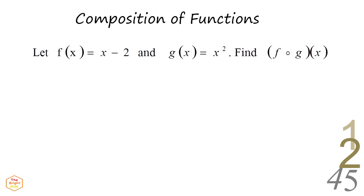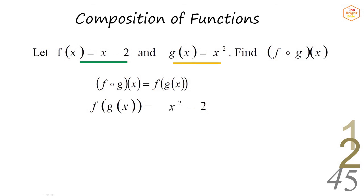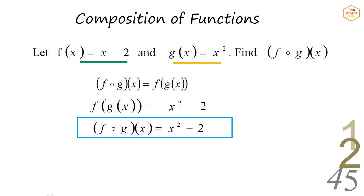Given the same functions — f of x equals x minus 2, and g of x equals x squared — find f of g of x. When solving composite functions, first we write the first function. Then we replace all the x with the second function. Then just simplify the terms to get the function.